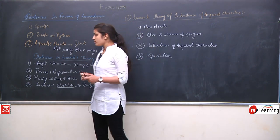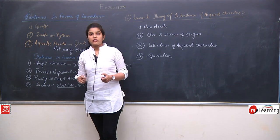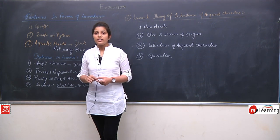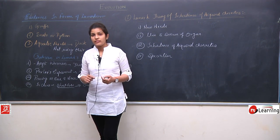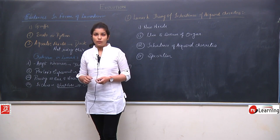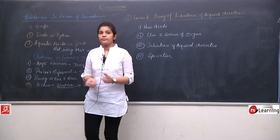So these were some evidences in favor of Lamarckism and these were the criticisms of Lamarck's theory. This was all about the Lamarck theory. The next theory we are going to take is Darwinism, or Darwin's theory of natural selection.